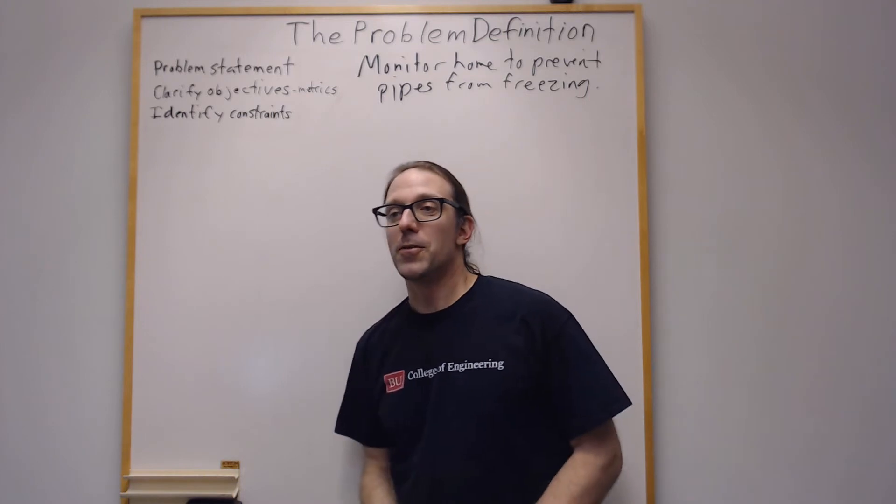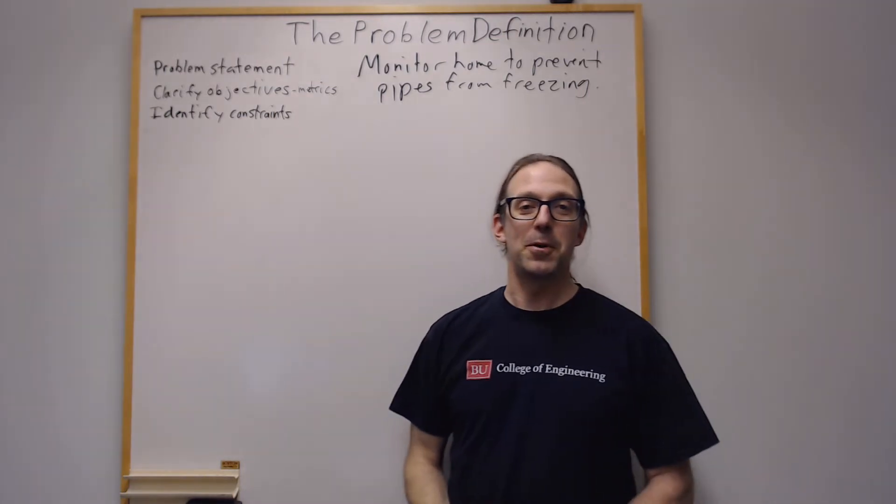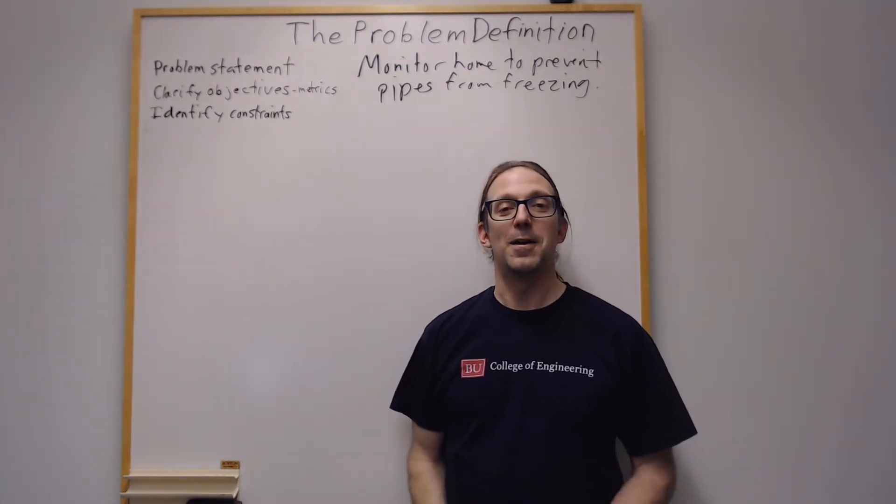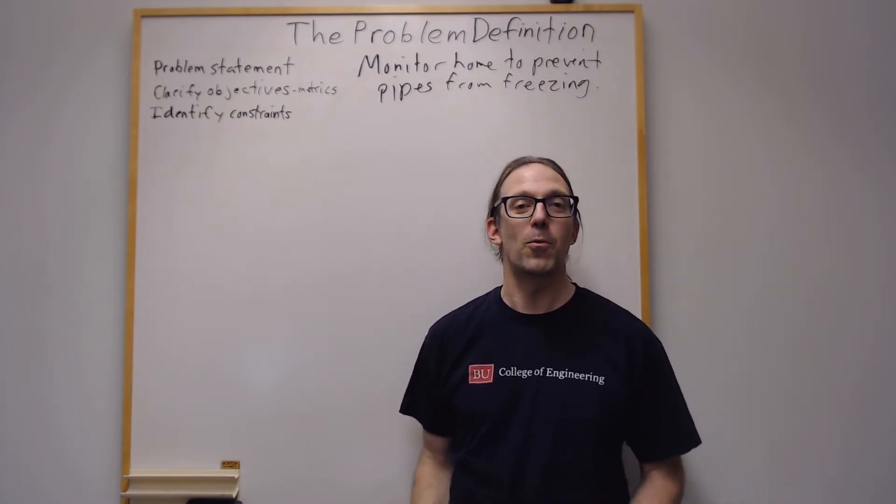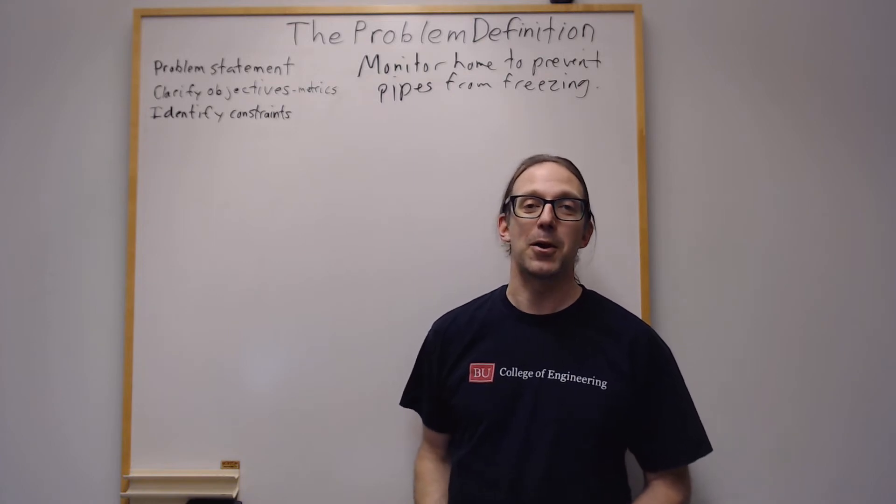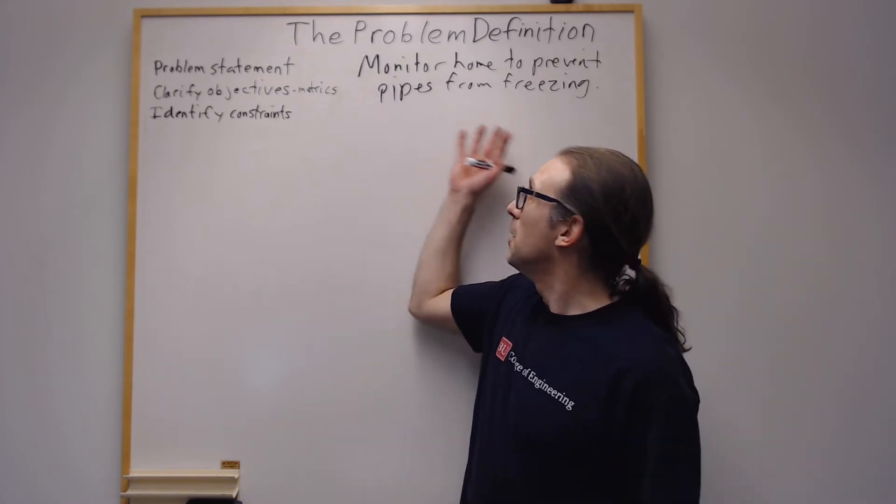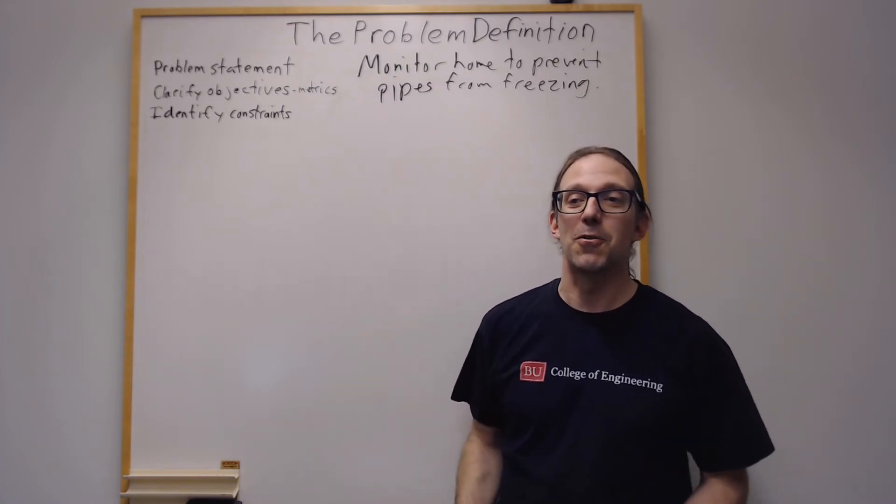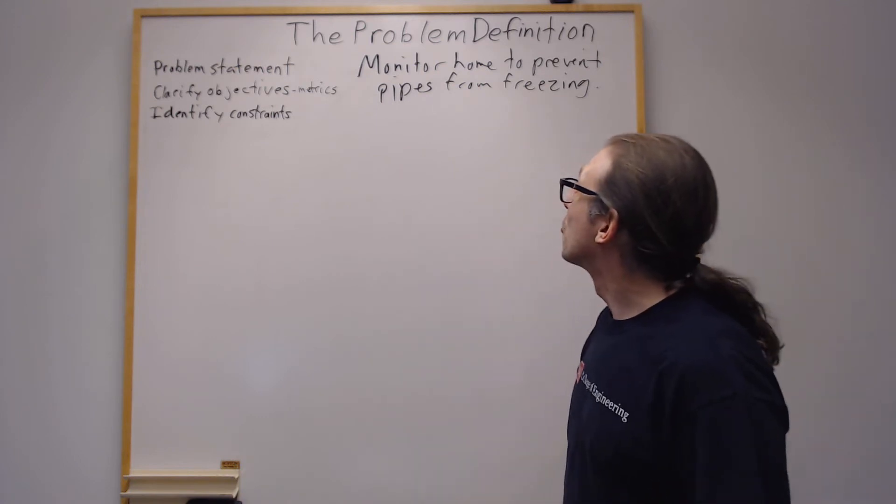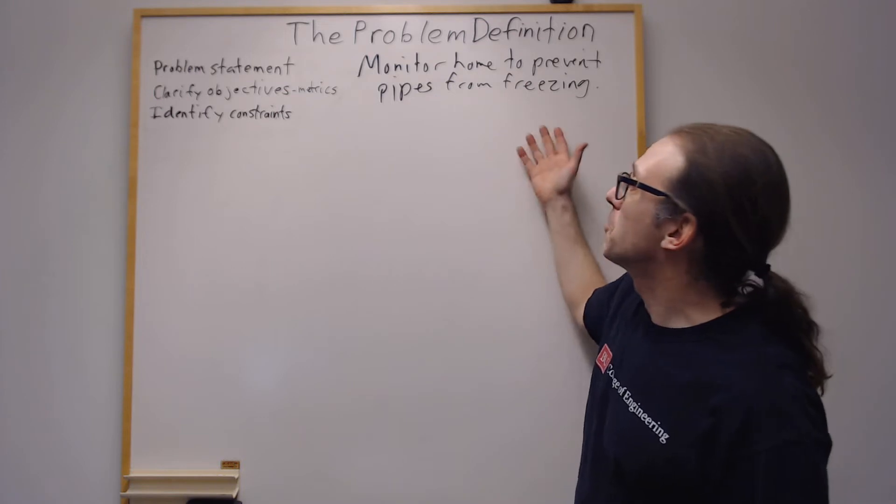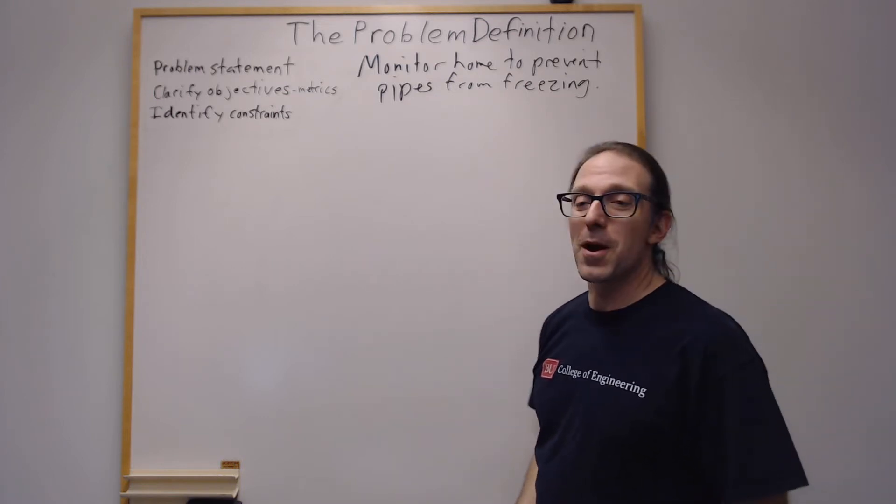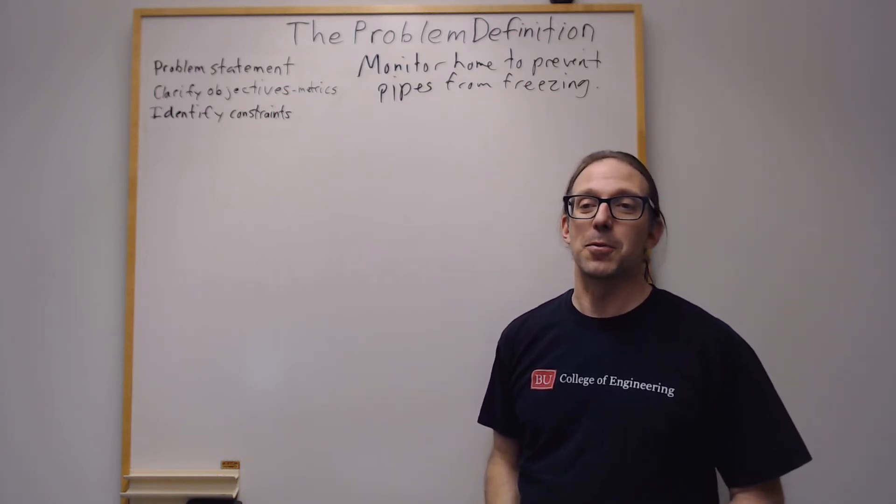And so if you have a good problem statement, it could really be your guiding light in the sense that whenever you have a question about your design, if you should go one way or another way, you can look back at your problem statement and see if whatever you're doing is bringing you to solve that actual problem. So here's a problem statement: monitor the home to prevent the pipes from freezing. So now that we have that sorted out, we can clarify some of the objectives.